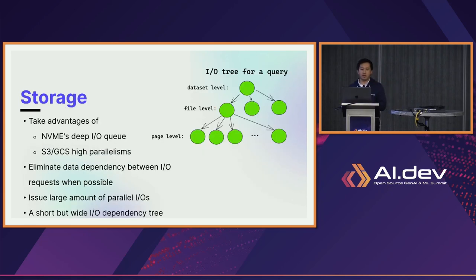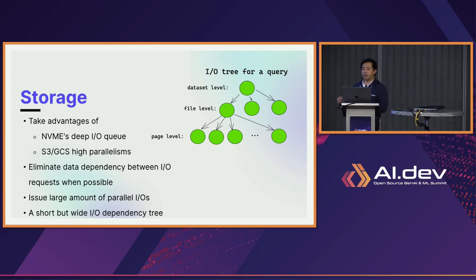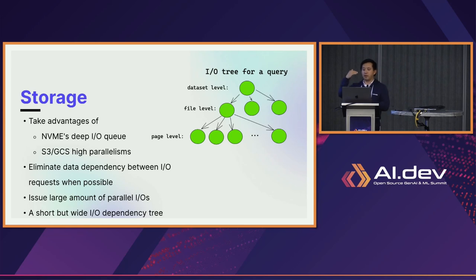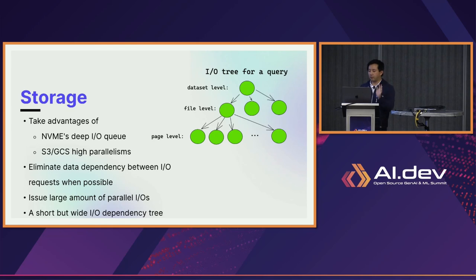Third, storage: with modern NVMes and cloud object storage, you have much better support for higher parallelism and very deep IO queues. What we want to do is make your IO scan process very shallow and very wide — store a lot of the metadata outside in an external data structure so you can cache it, and then to get the data needed for a particular query, just issue lots of parallel requests. That gives a lot better performance as well.